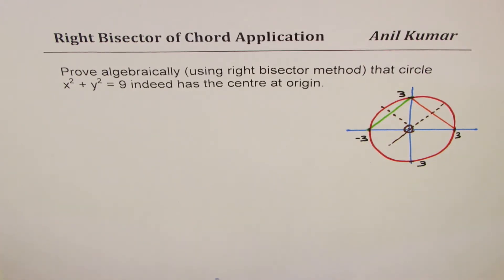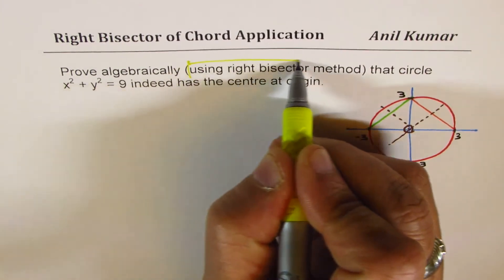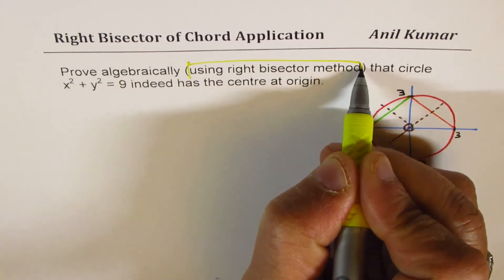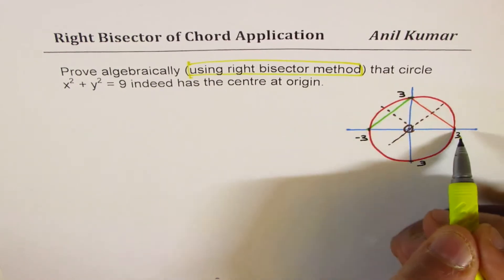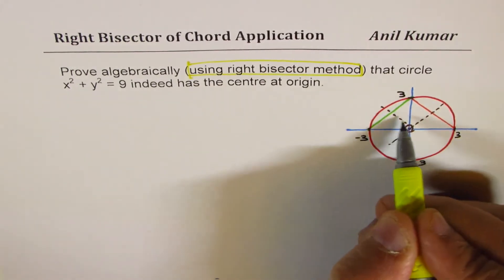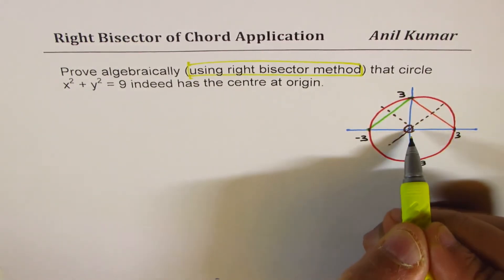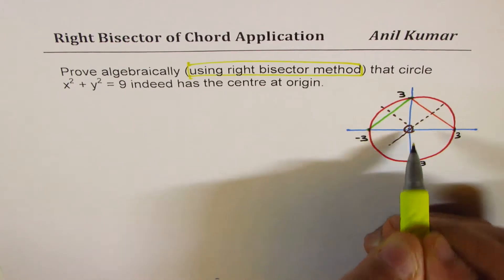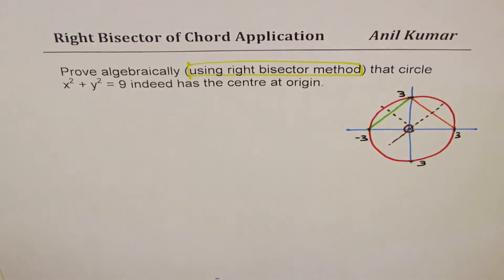That is what we really mean by using the right bisector method. These are the two chords, these are the right bisectors, and the point of intersection is the center. If that point happens to be the origin, then the origin is the center.